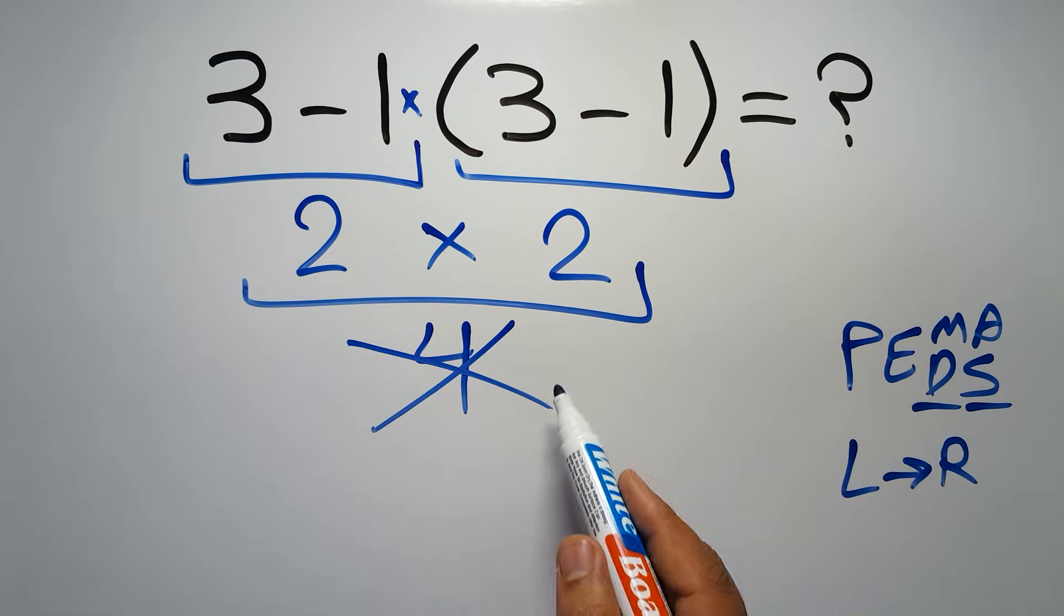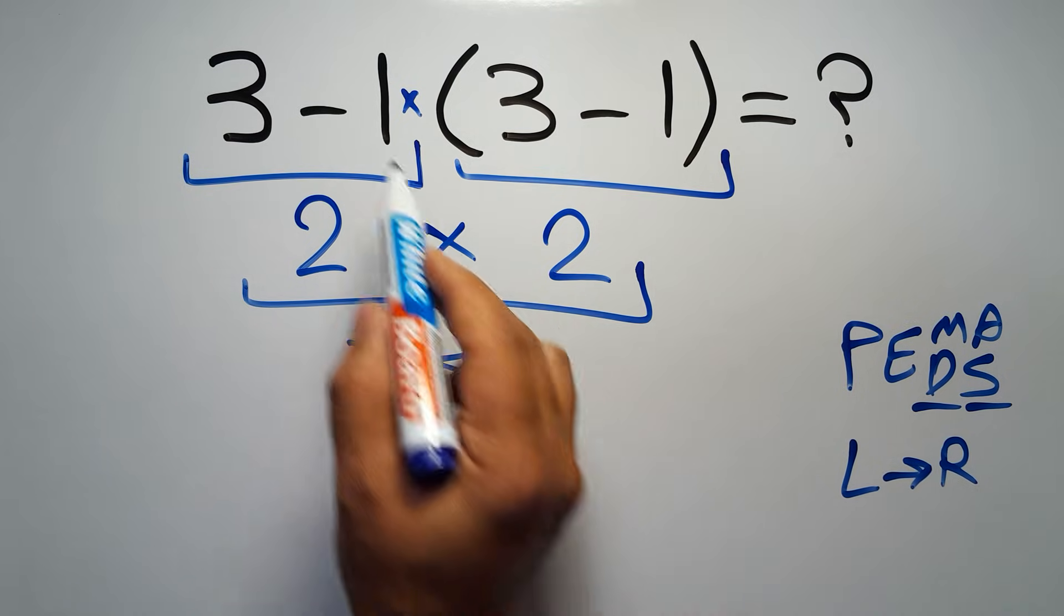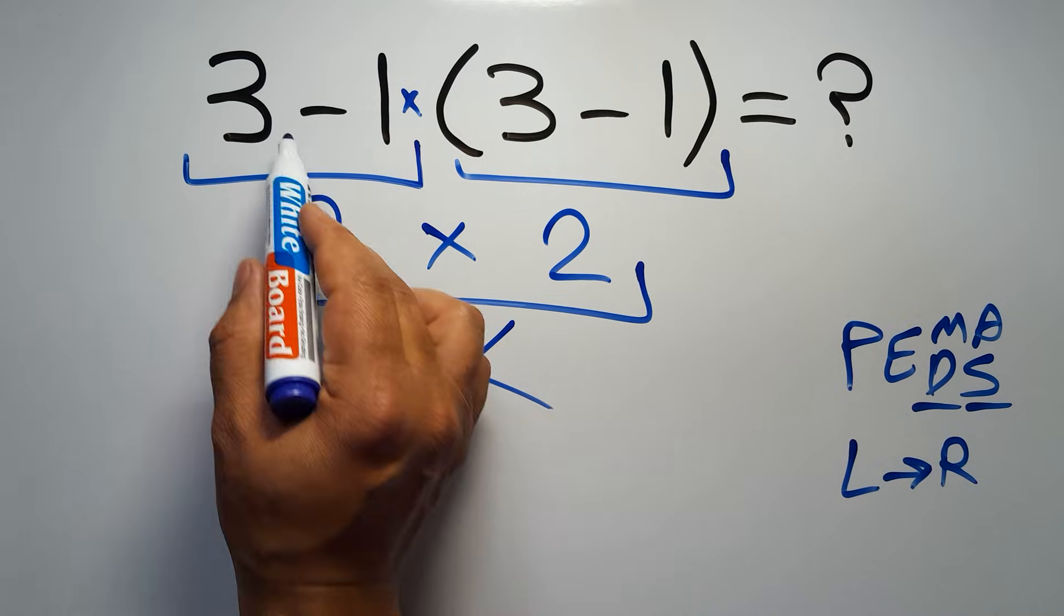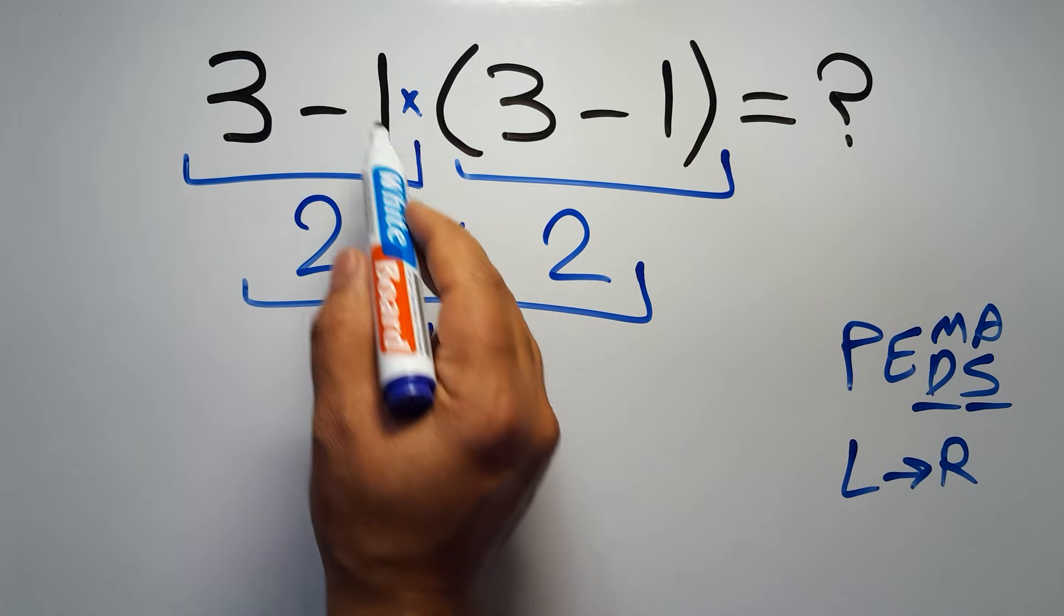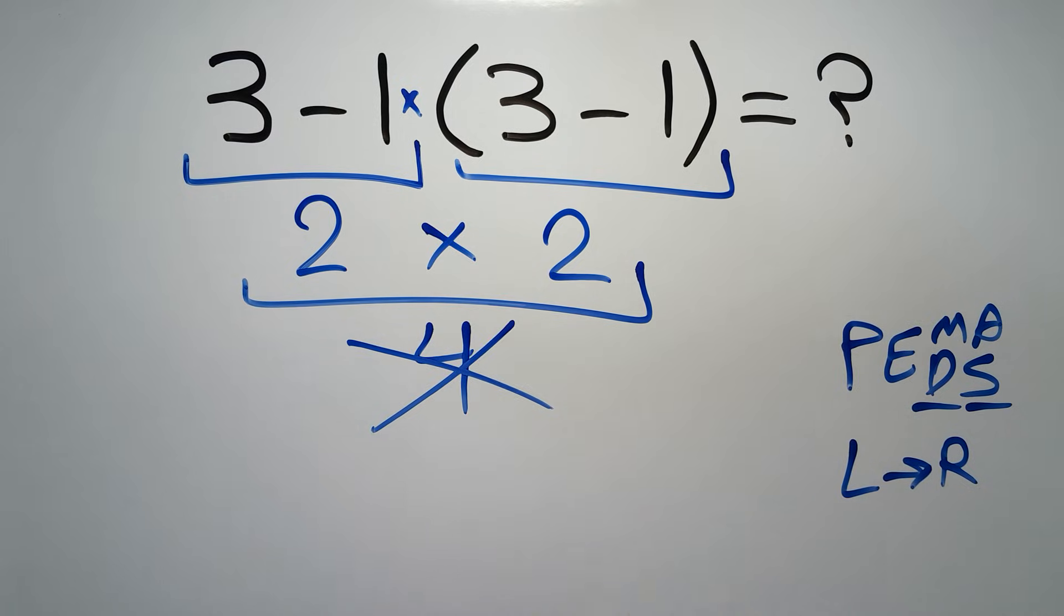So according to PEMDAS, first we have to do this parentheses, then this multiplication, and finally this subtraction. If we do this subtraction before this multiplication or this parentheses, it is wrong.